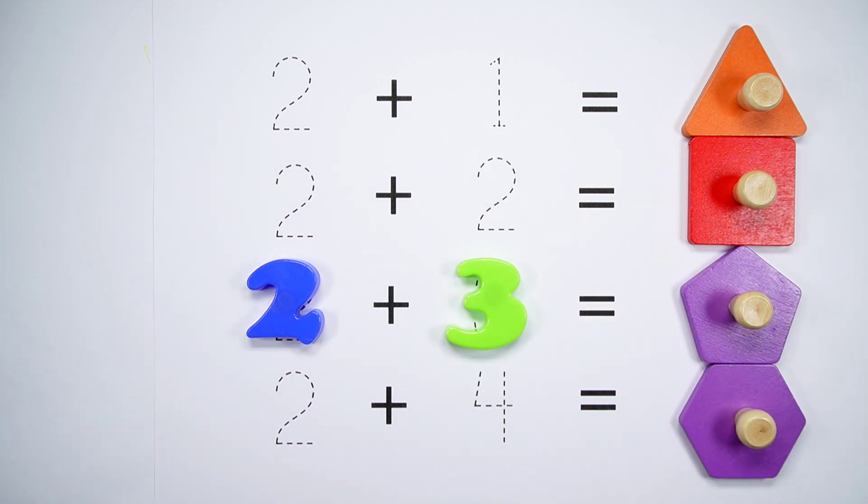2 plus 3 equals 5. Pentagon, a pentagon has 5 sides.